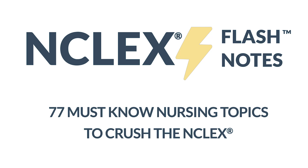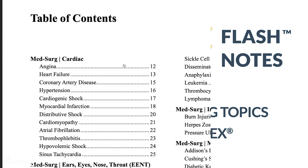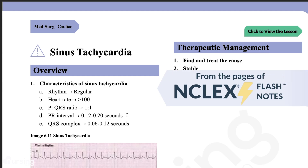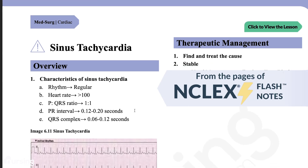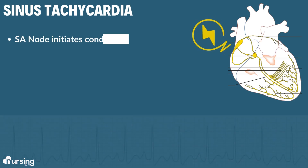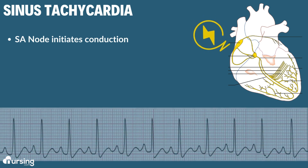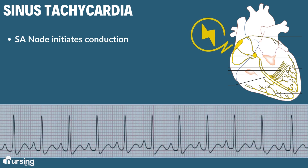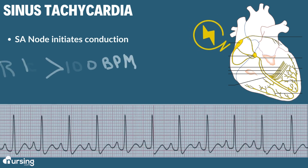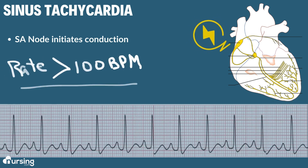In this lesson, we're going to talk about the characteristics of sinus tachycardia. We're also going to break down each of the steps to learn how to identify it on an EKG. In sinus tachycardia, the SA node initiates the electrical conduction just like a normal sinus rhythm. The only difference is that it is beating at a rate greater than 100 beats per minute.